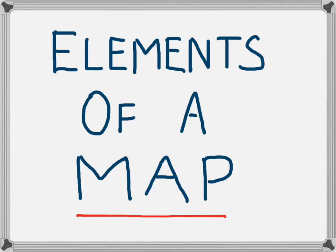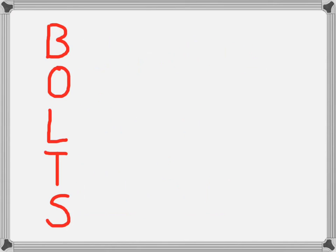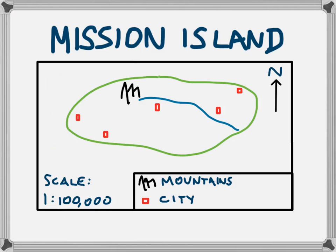In this video we are going to look at all of the important elements of a map. There are five main elements that each map should have, and they are represented by these letters which spell the word BOLTS. We are going to use this very simple map of Mission Island to look at each of these five elements.